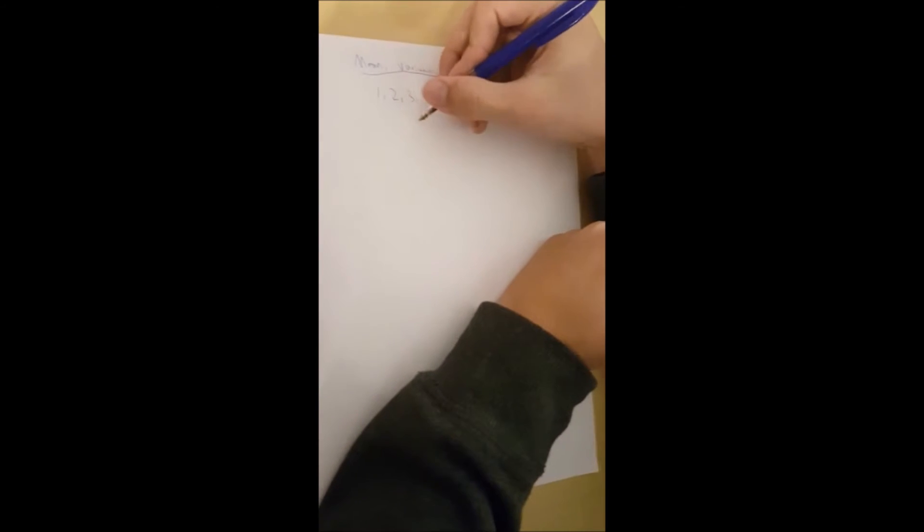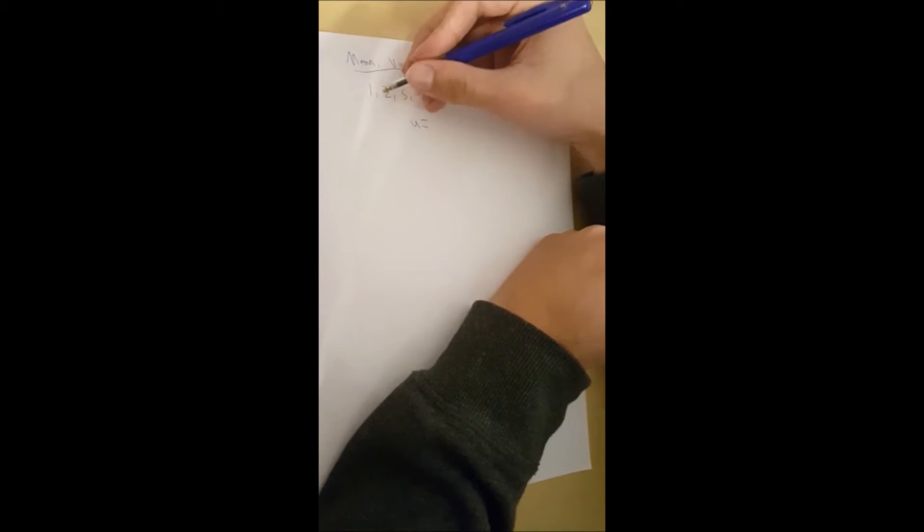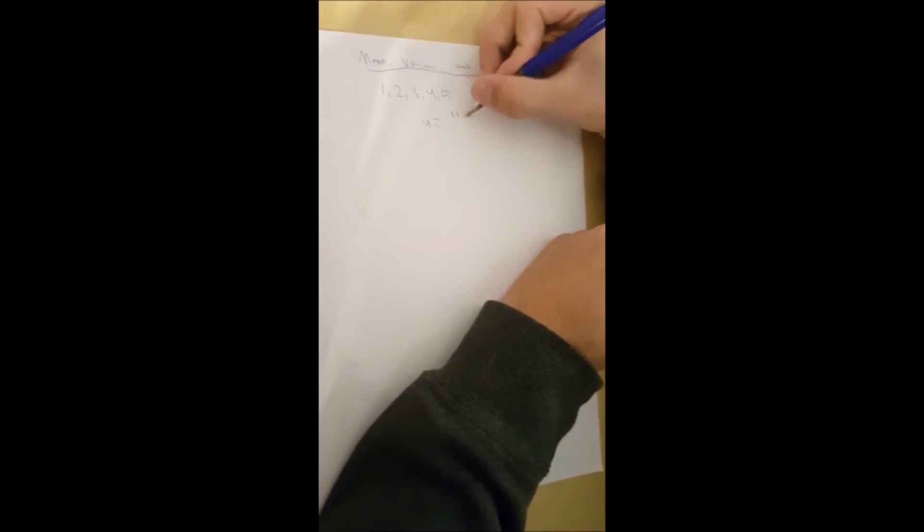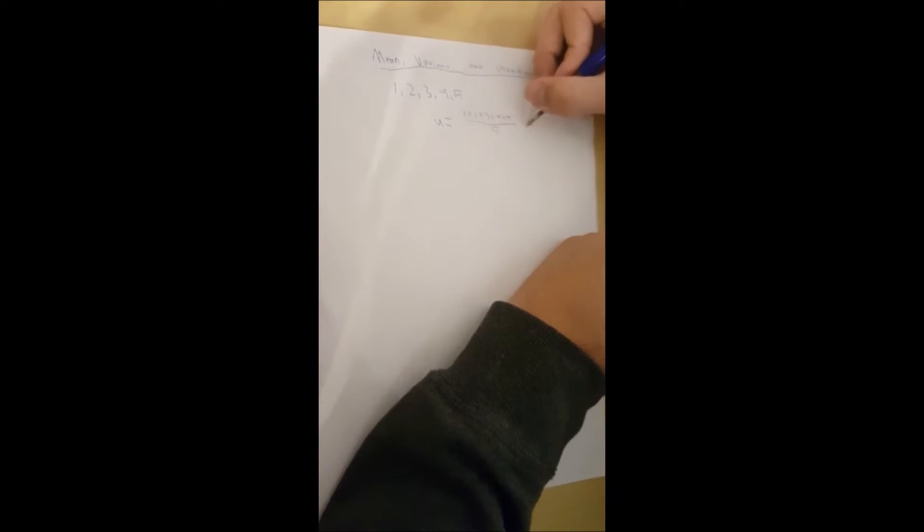Now the mean, you should also know this already, is the sum of the terms 1, 2, 3, 4, 5 divided by the amount of terms, and that's 5. That's going to be equal to 15 over 5, and that's 3. So the mean is 3.